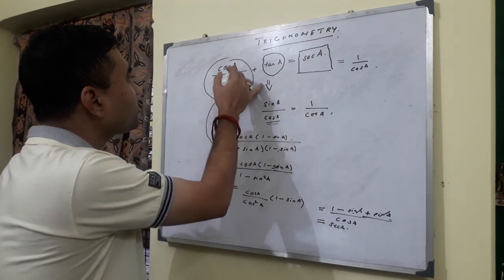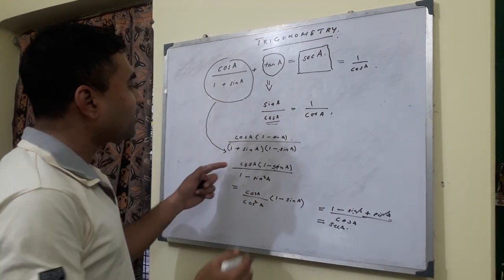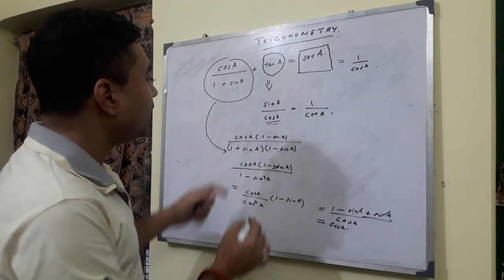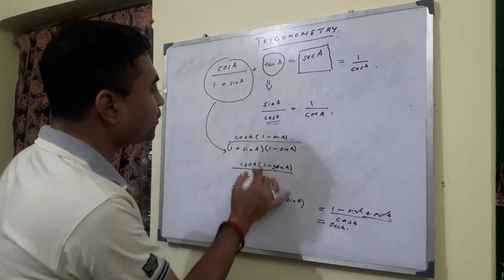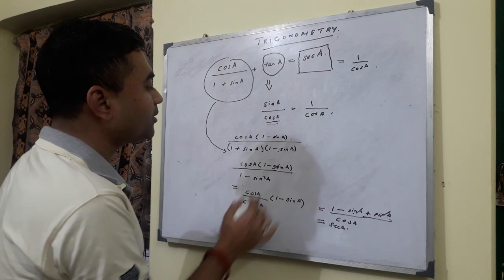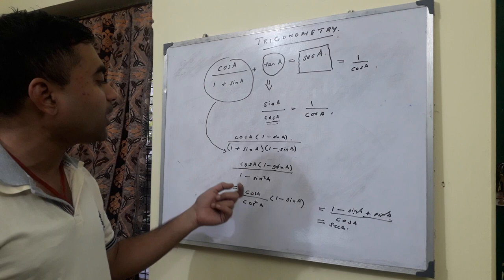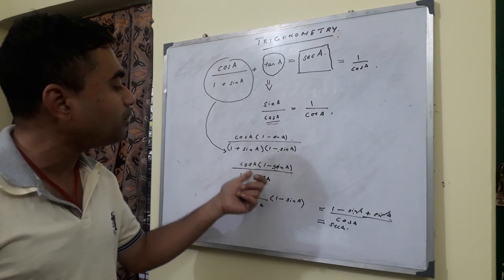And for cos A over 1 plus sin A, we multiply the denominator and numerator by 1 minus sin A. We get 1 minus sin squared A. This is A plus B times A minus B. Why did I do it? Because sin squared A plus cos squared A equals 1, so 1 minus sin squared A will become cos squared A.